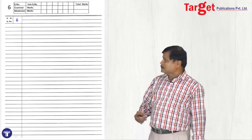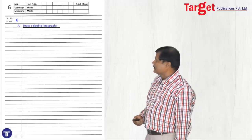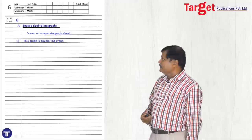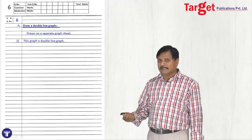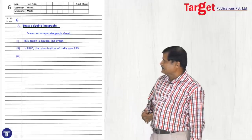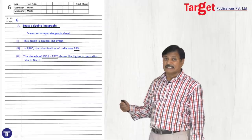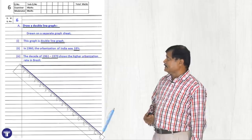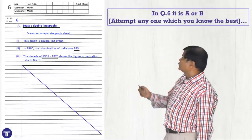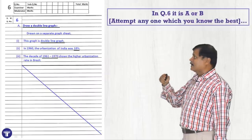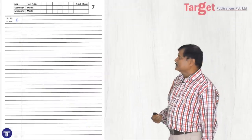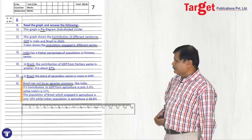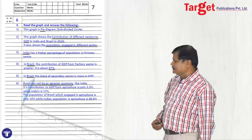For 6A, I drew a double line and wrote 'drawn on a separate graph sheet' — I did not write the graph question here. Then for 6B — graph reading — there are three questions. First question: 'this graph is a double line graph', then second, then third. I underlined the answers so it is easy for the corrector. Then I cancelled the unused space. Now I am on question 7 — answer in detail. As I told, you have to attempt any one of 6A or 6B.